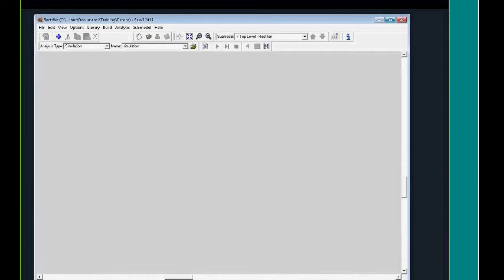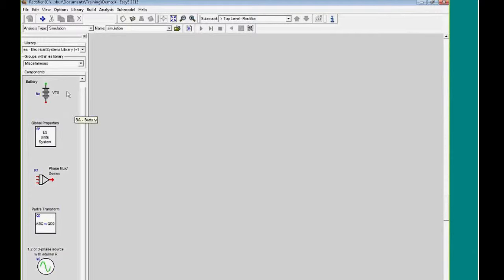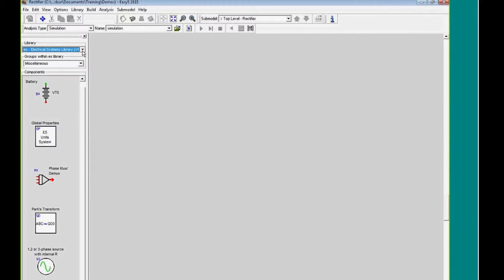Okay. So now what I'm going to do is do a short demo. And I'm going to bring up EZ5 here. Okay. So let's see. I don't know how many of you have seen EZ5, but I'm actually going to build a short, a small model and show you how you can go about doing that. So here are the components available, and this is the electrical systems library. There are a number of libraries available in EZ5 here. I'm using the electrical systems library. And I'm just going to drag in this component here, which is just the global properties, which just tells me what unit system I'm using.